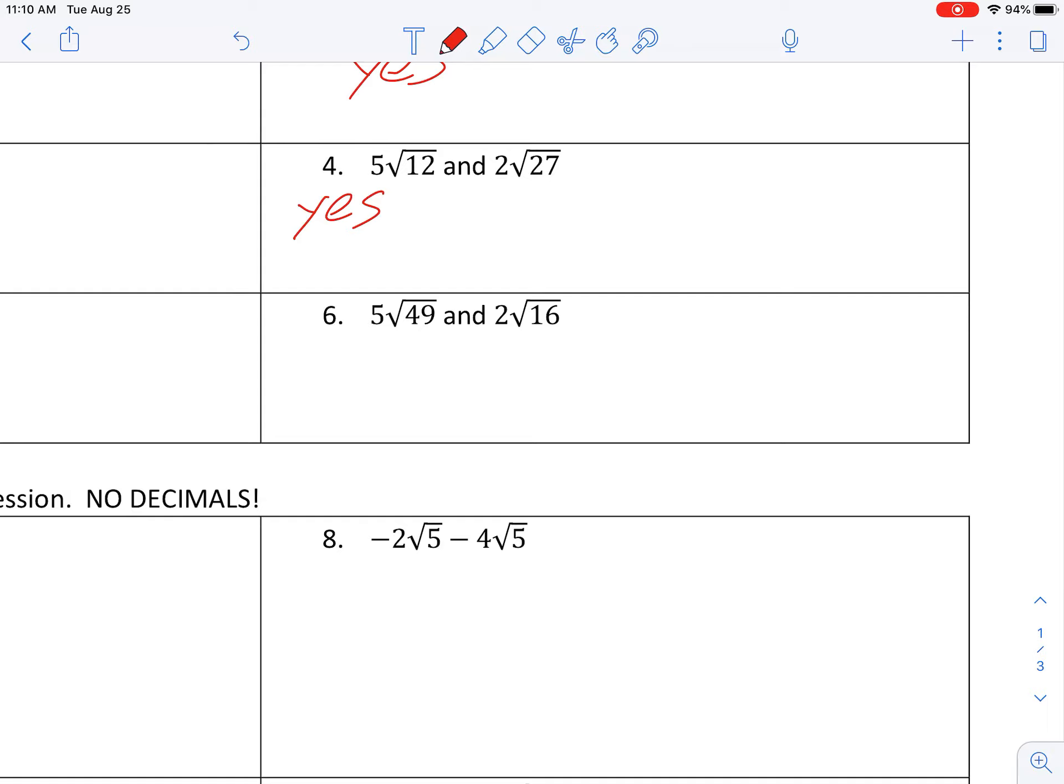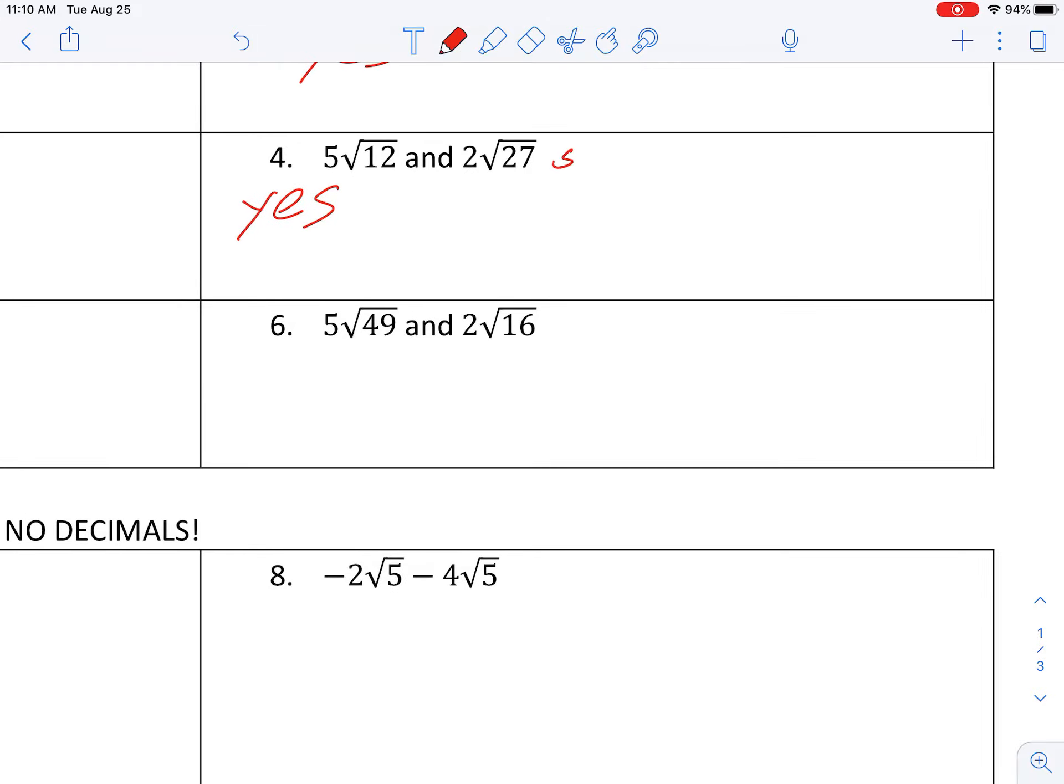So before we go ahead and simplify these, before we determine what these are like, we need to simplify them. So what I want to do then is off to the side, take five root 12 and simplify it down like we've been doing since a couple days ago. Get your factor tree going. Get your prime factorization going for 12. So 12 is 2, 2, and a 3. Pairs make perfect squares. So I simplify 5 root 12 down into 10 root 3.